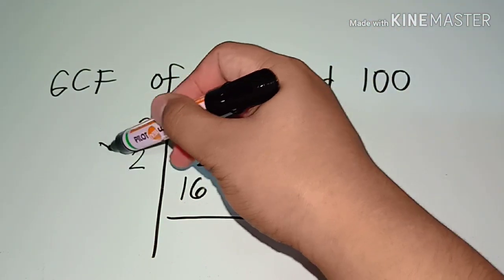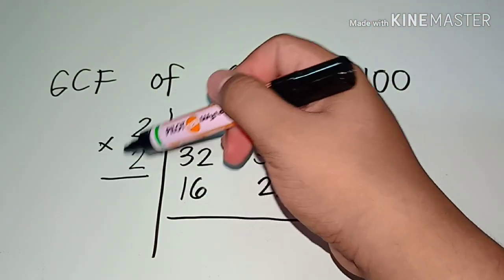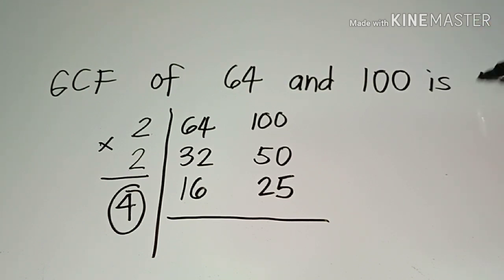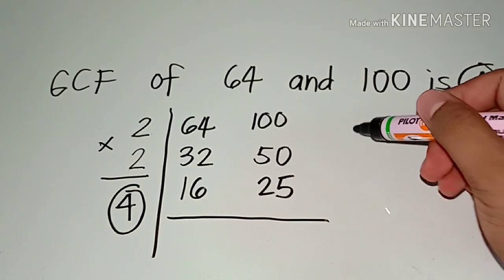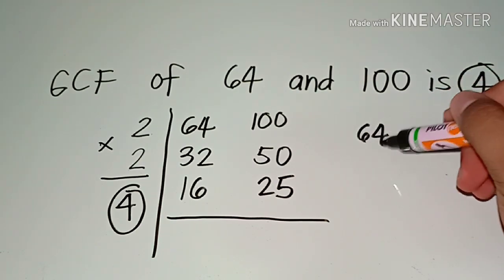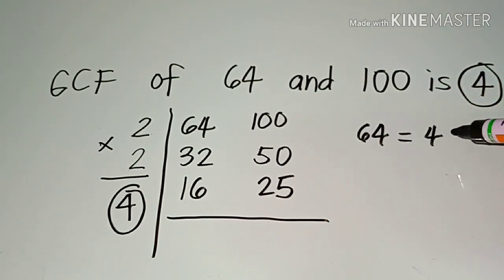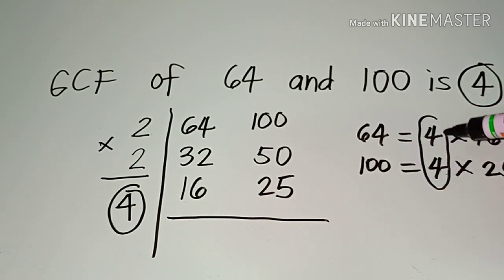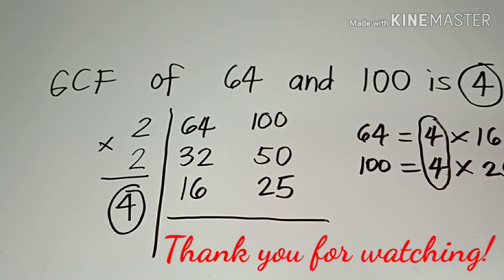Multiply the numbers on the left side: 2 times 2 is 4. So the greatest common factor of 64 and 100 is 4. To check: for 64, the factors are 4 times 16. For 100, the factors are 4 times 25. So their common factor is 4.